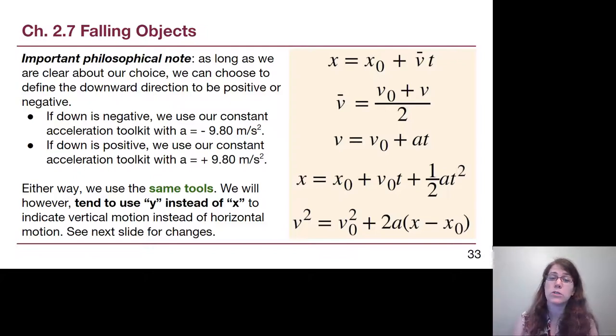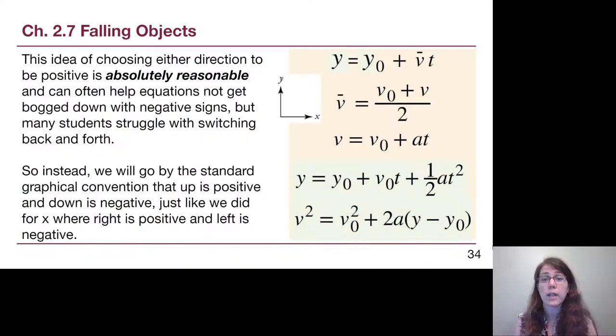You can absolutely choose down to be positive or negative, as long as all of your numbers are consistent with each other. But in this class, we are going to use the standard kind of default that up is positive.